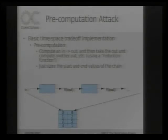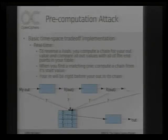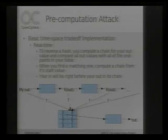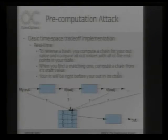What that gives you is you only have to store the start and the end. When you actually want to do the real-time attack, you basically create a chain from whatever output you have. If you have a value that's inside the chain somewhere, you can start creating chains ahead of that at varying lengths, and eventually you'll find an endpoint.